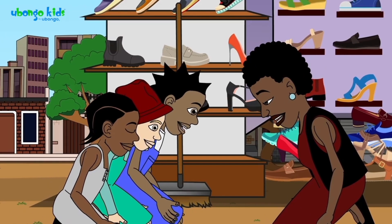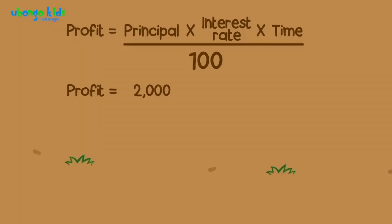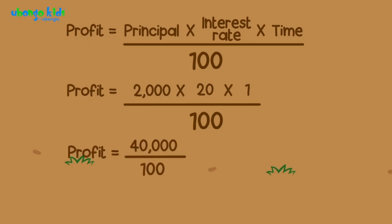Let's use our situation as an example. We have 2,000 as our principal and the interest rate is 20% for each month. So our profit after one month of investment will be: 2,000 times 20 times 1, then divide it by 100. 2,000 times 20 is 40,000. 40,000 times 1 is 40,000. So now divide 40,000 by 100 and the answer is 400 shillings.